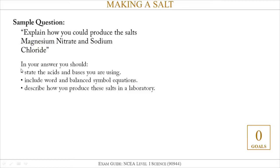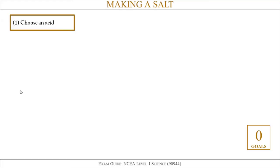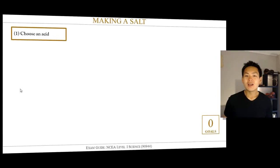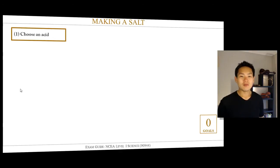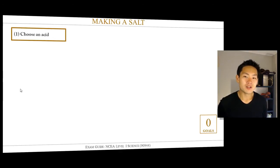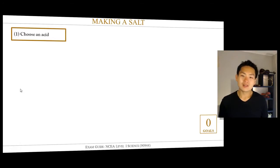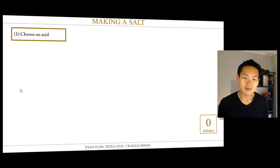I've also included a set of bullet points which we are going to try to aim to meet during the explanation of how we might answer this particular question. The first thing I would do is to figure out which acid I'm going to use to make, say, the sodium chloride salt or the magnesium nitrate salt.